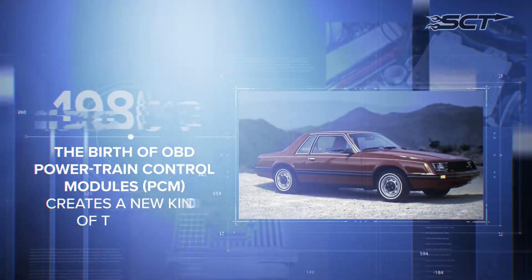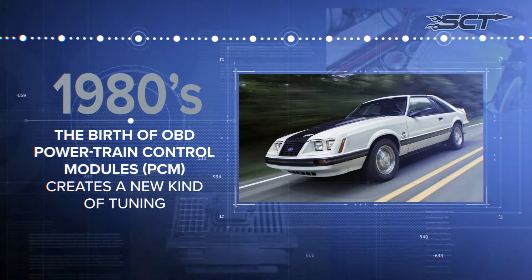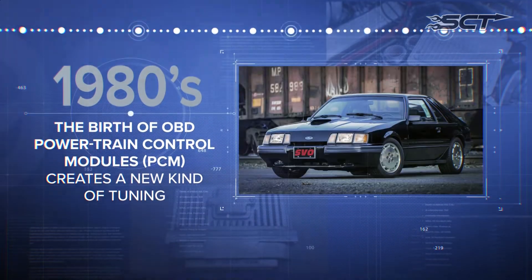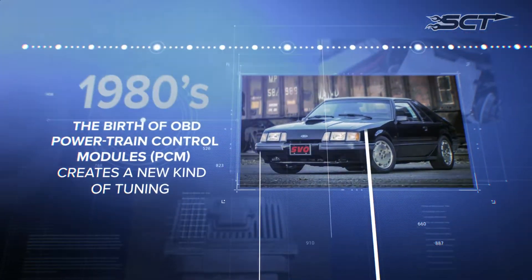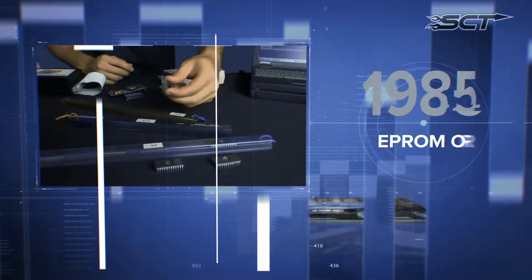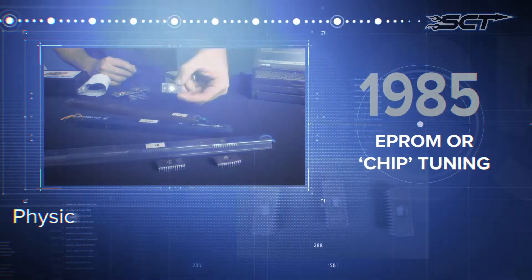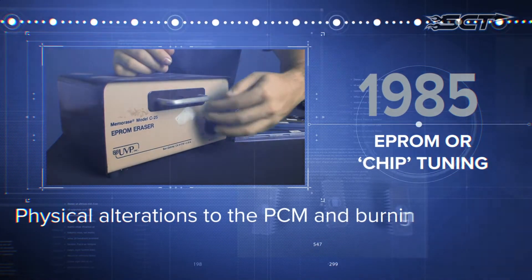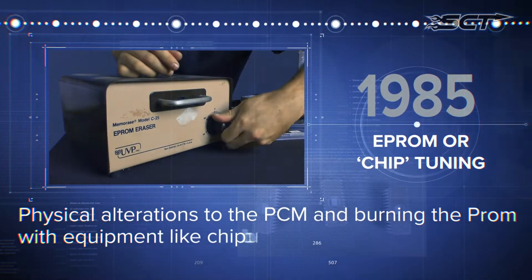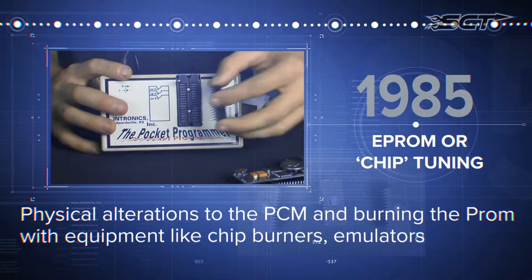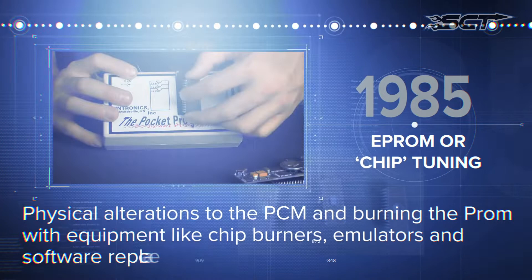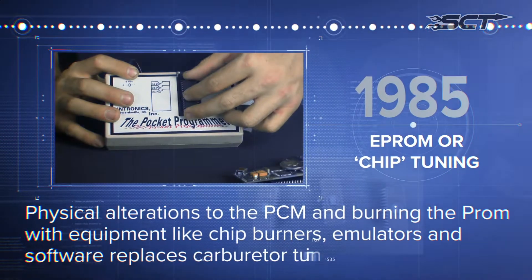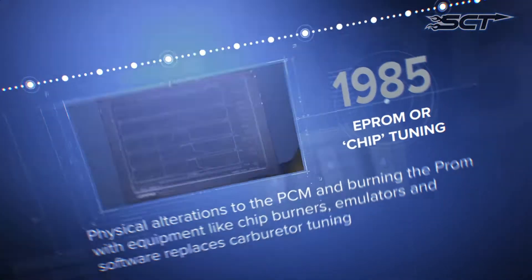Electronic fuel injection becomes more common and the birth of OBD powertrain control modules creates a new kind of tuning: EEPROM or chip tuning. Physical alterations to the PCM and burning the PROM with equipment like chip burners, emulators, and software replaces carburetor tuning.